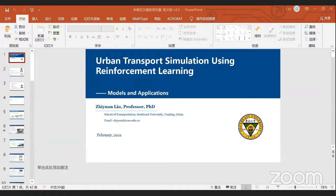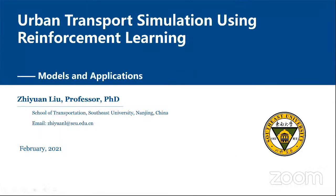I first need to introduce Professor Zhiyuan Liu. Professor Liu is a current professor and vice dean in the School of Transportation at Southeast University, Nanjing, China. He received his PhD degree from the National University of Singapore. From 2012 to 2015, he was a lecturer at Monash University of Australia. In 2018, he was a visiting scholar in the School of Mathematics and Statistics at the University of Melbourne.